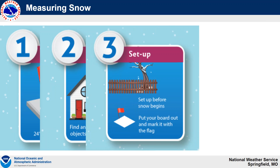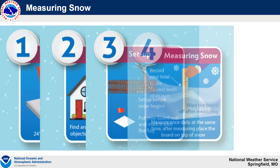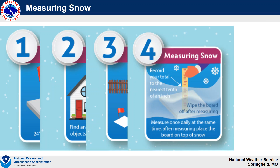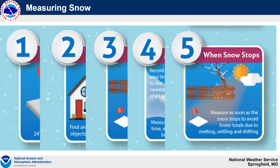You want to set that snowboard up preferably before snow starts. Maybe you have a field or an open area that's not too far away — set that board out and mark it with a flag. When you measure the snow, always measure the snowboard and record your total to the nearest tenth of an inch. After you take a measurement, wipe the board off so that you can measure any additional snowfall. If you're able to measure once a day at the same time, that would be very helpful. After measuring, place the board on top of any remaining snowfall. When the snow stops, measure that as soon as possible to avoid any lower totals due to melting, settling, or drifting.